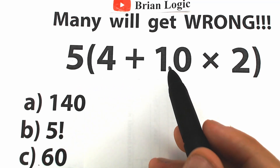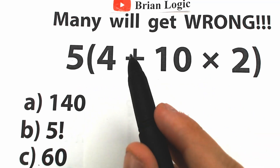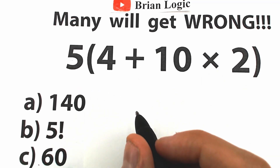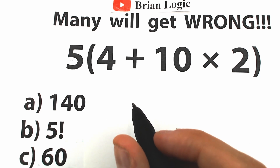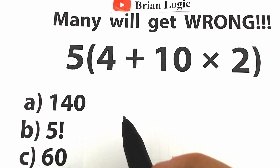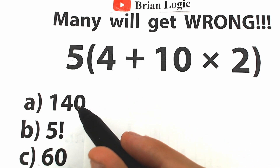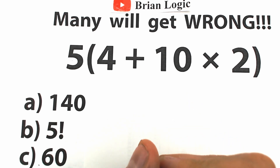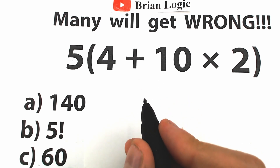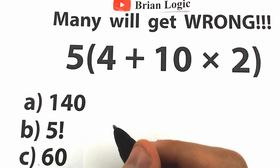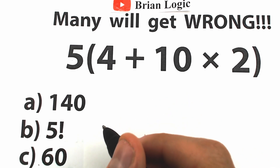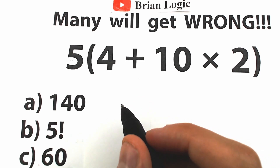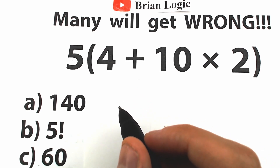We have 5 times, inside parentheses, 4 plus 10 times 2. Right now you can easily pause the video and write your suggestion down — write your thoughts about this question. We have three options: A, B, and C. Choose one option. What do you think is the correct answer? Write your option down into the comment section. We will check our answers because this is a very tricky question and a great test for everyone.